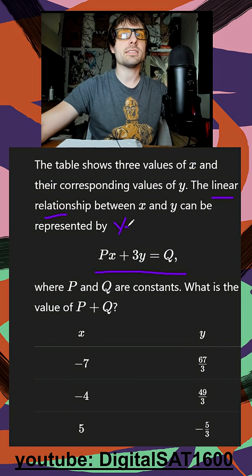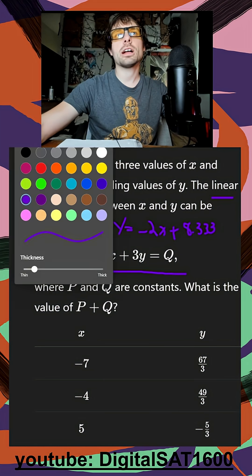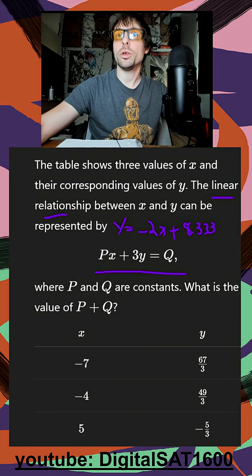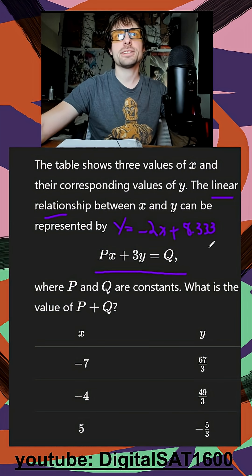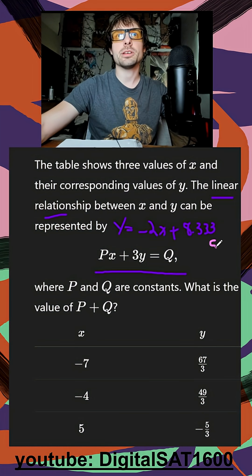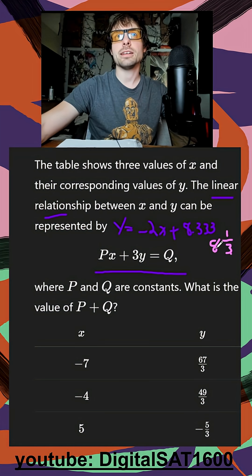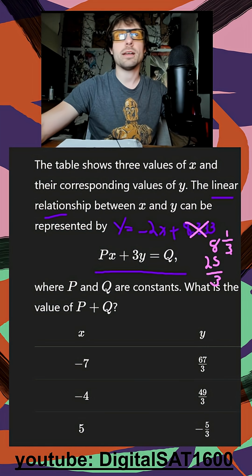So we got y is equal to negative 2x plus 8.3333. There are a couple fractions that we do want to know what their decimal form looks like. And 0.333 is going to be one of them — that's technically just going to be 8 and 1 third. We can turn it into an improper fraction: 25 over 3. And you're going to see why we did that in one second.